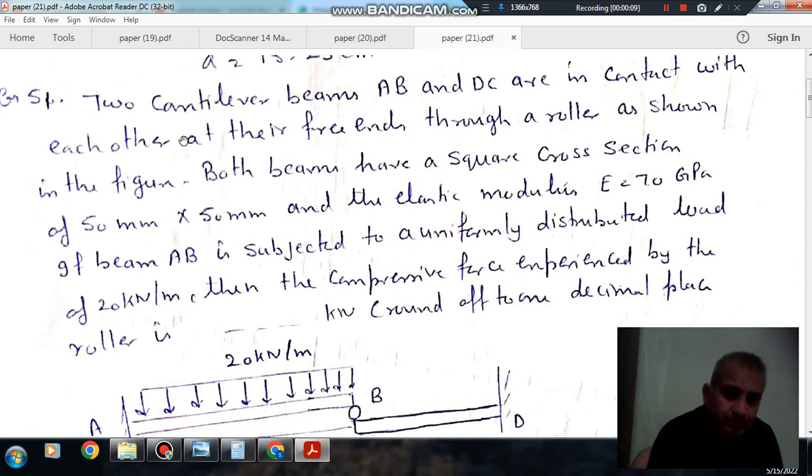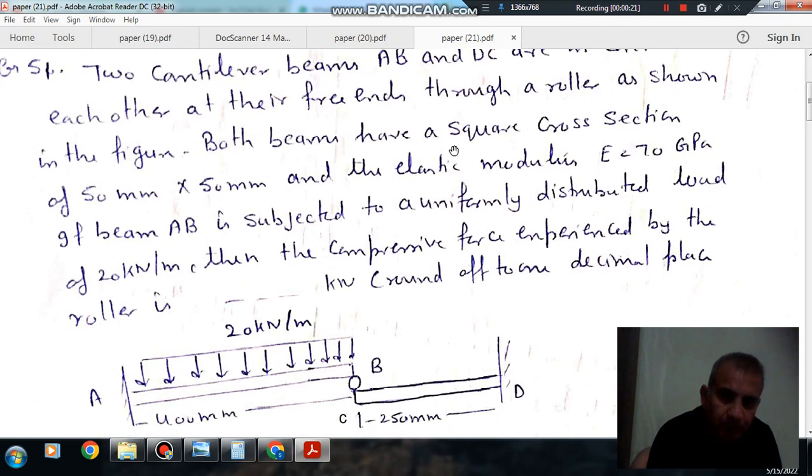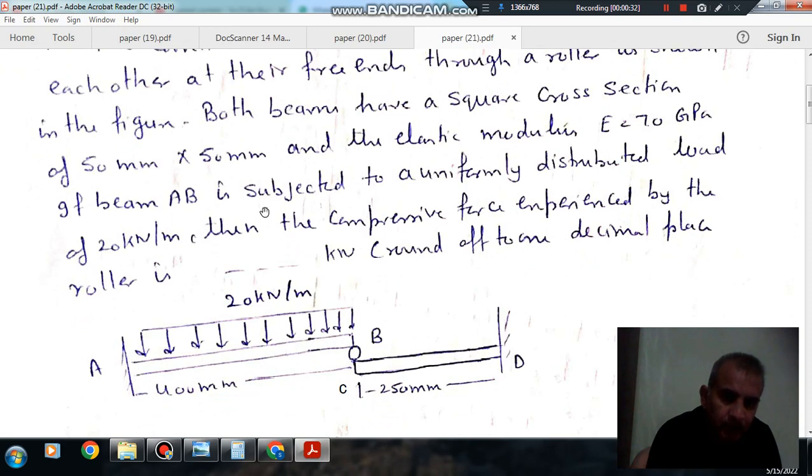Question number 51 is: two cantilever beams AB and DC are in contact with each other at their free ends through a roller as shown in the figure. Both beams have a square cross-section of 50 mm into 50 mm and elastic modulus E is equal to 270 GPa. If the beam AB is subjected to a uniformly distributed load of 20 kN per meter, then the compressive force experienced by the roller is dash kN, round off to 1.0 kN.